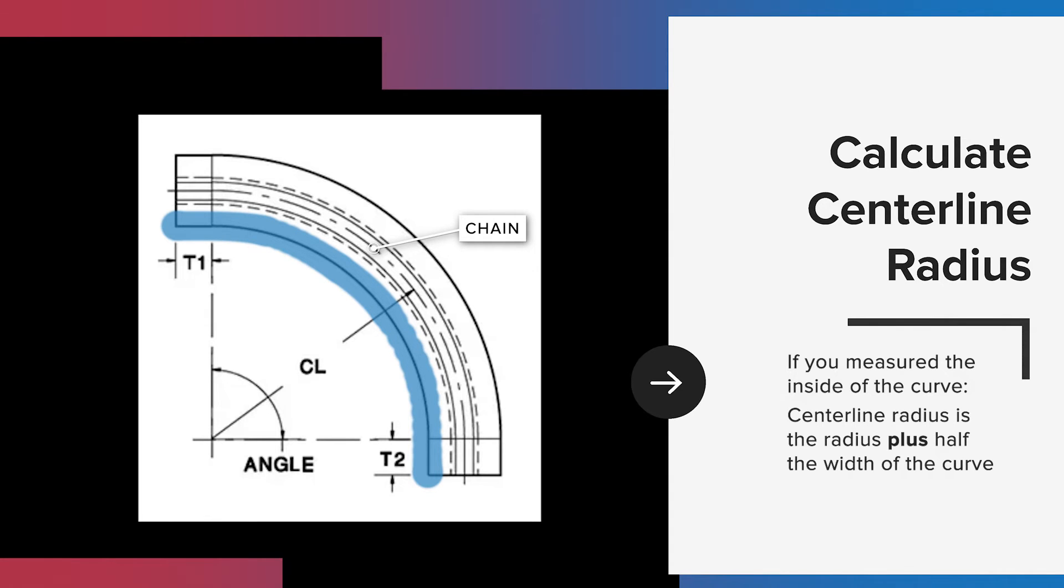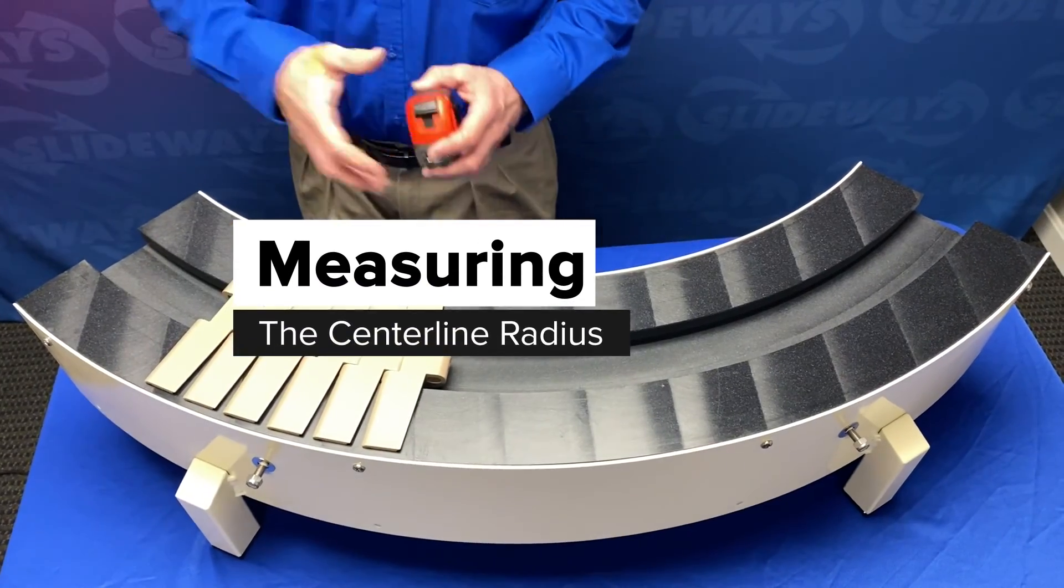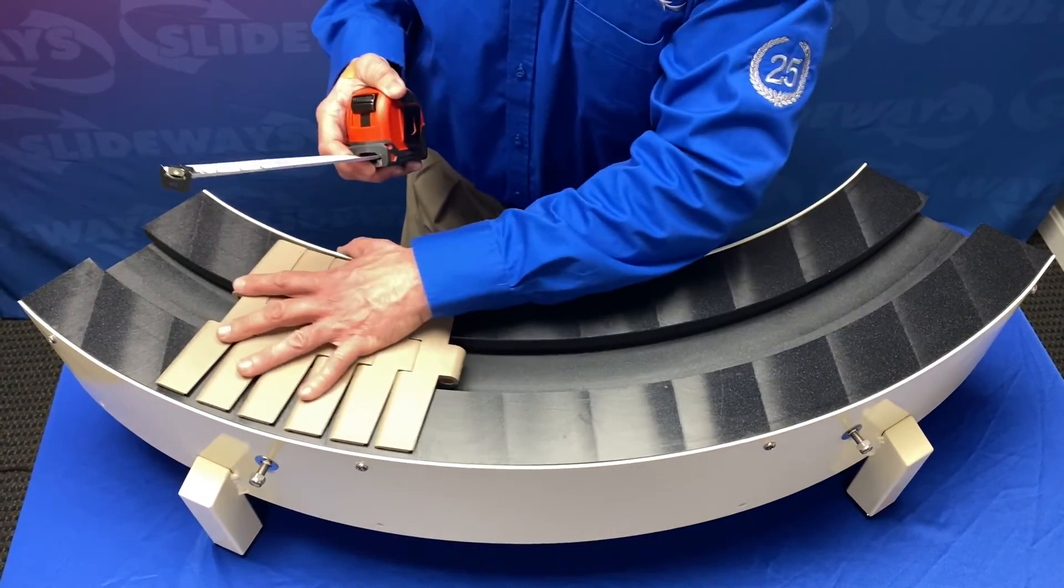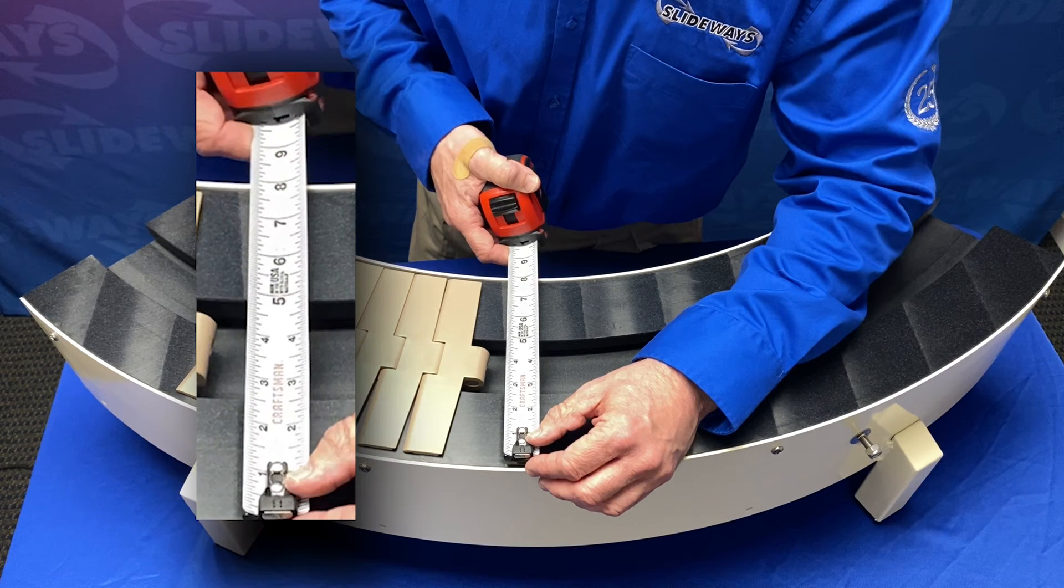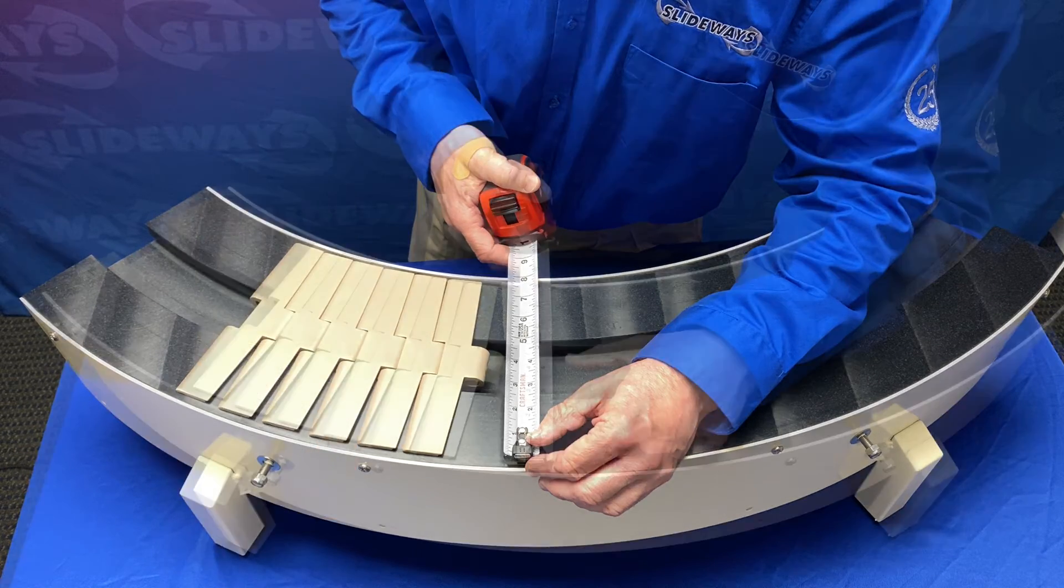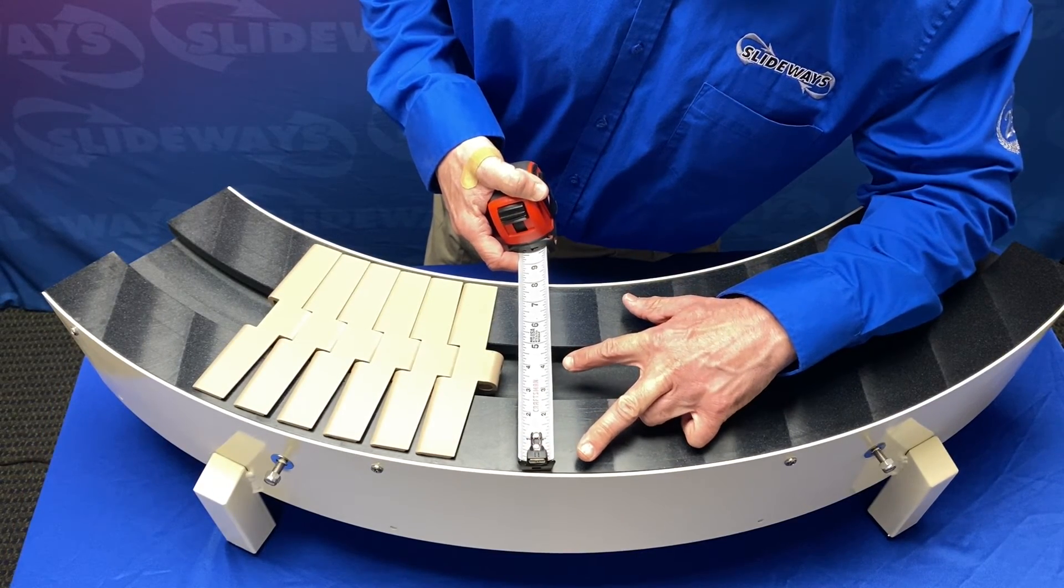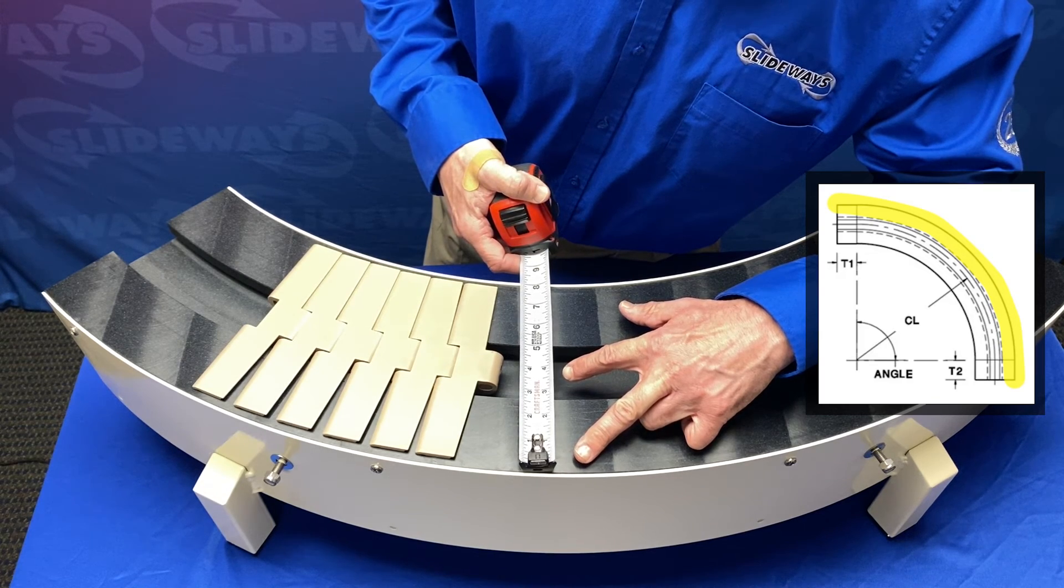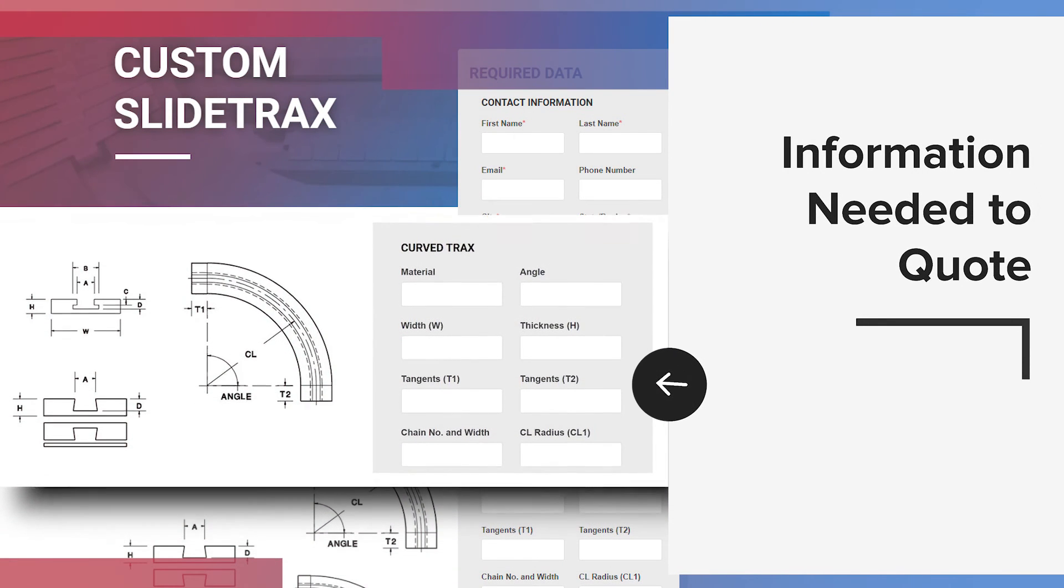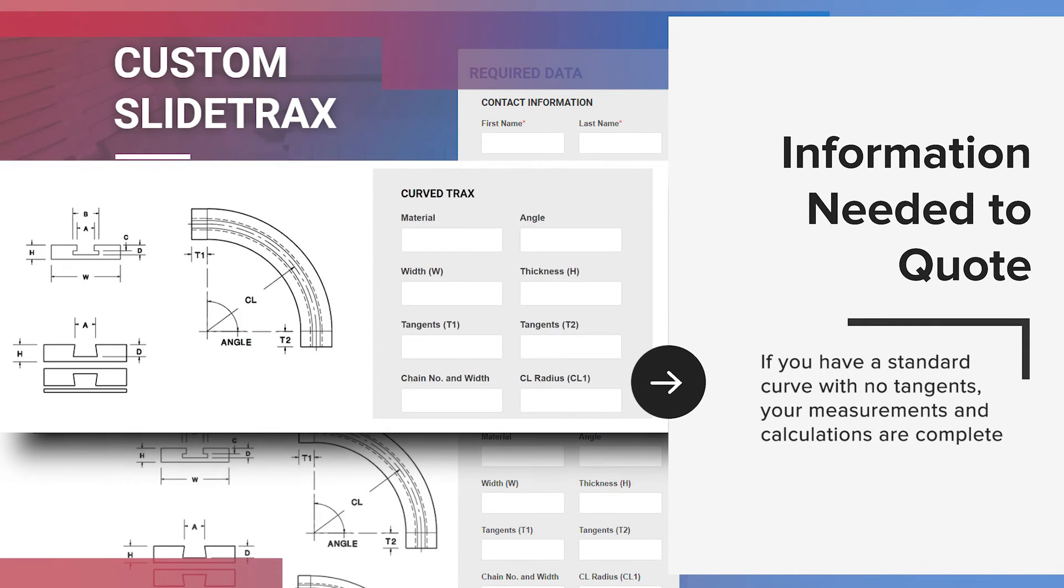Here's an example. We have calculated the outside radius of this curve to be 28 inches. We measured the width of our track as 8 inches. Half of 8 inches is 4 inches, which is our centerline. 28 inches minus 4 inches equals a centerline radius of 24 inches. If you have a standard curve with no tangents, your measurements and calculations are complete. You have all the dimensions you need to request a curved slide tracks quote with Slideways.